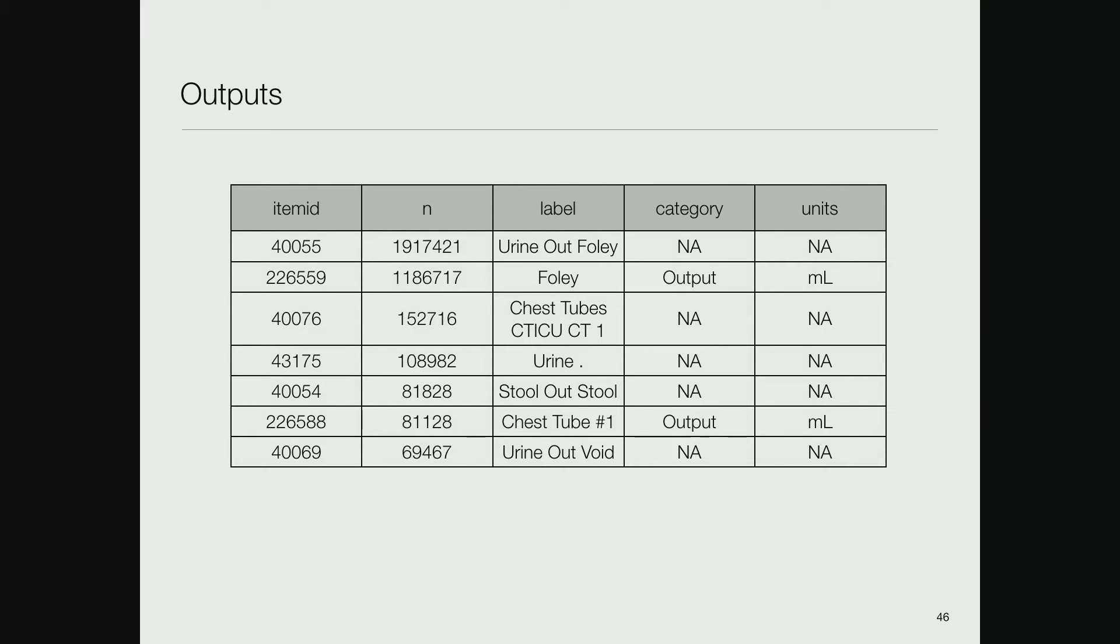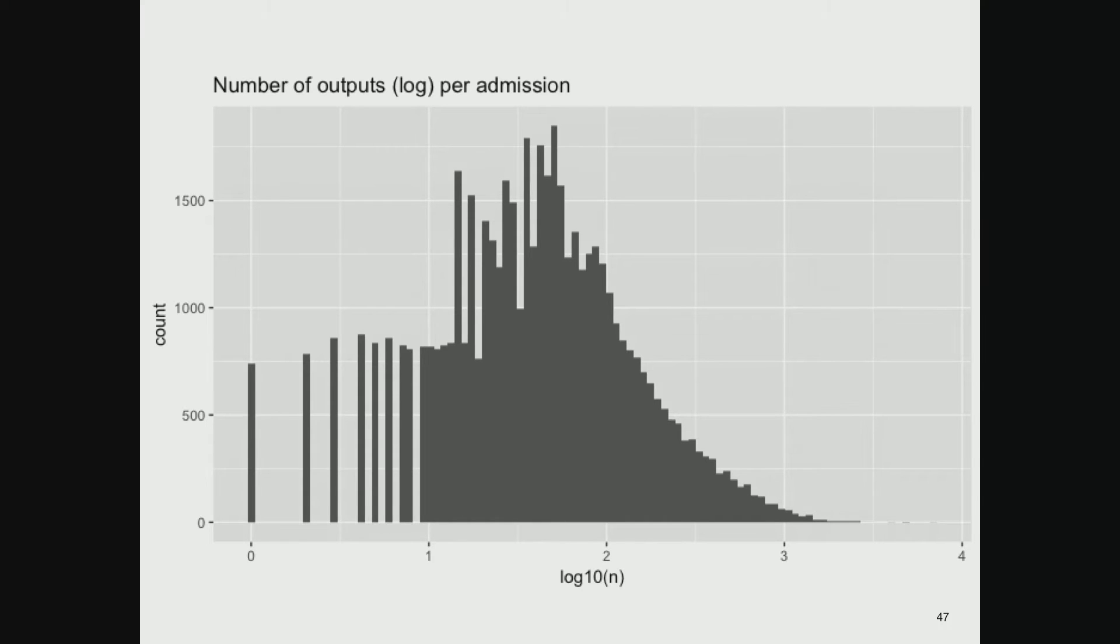We also track outputs. Foley catheter allows your bladder to drain without consciously going to bathroom. There are 1.9 million recordings of how much fluid came out. Chest tubes drain stuff out of your chest if you have congestion. Urine if you pee regularly, stool out.